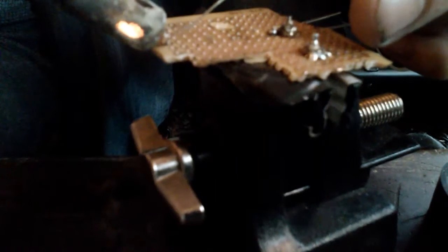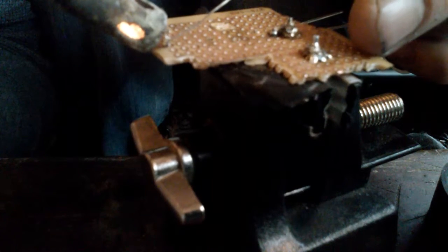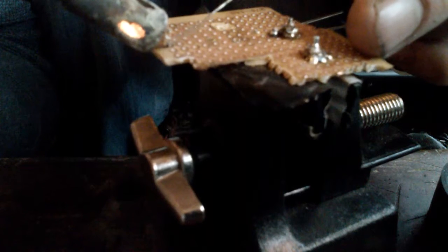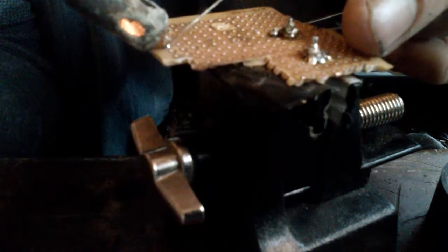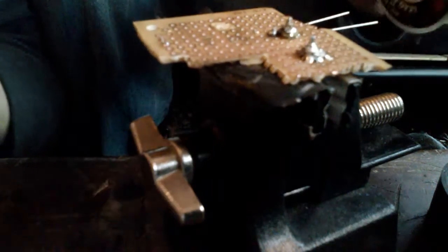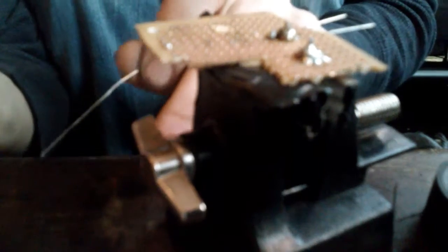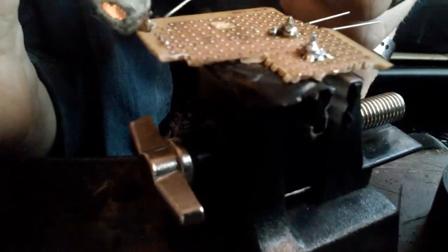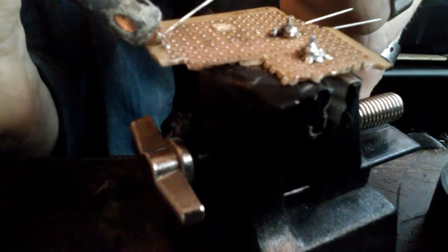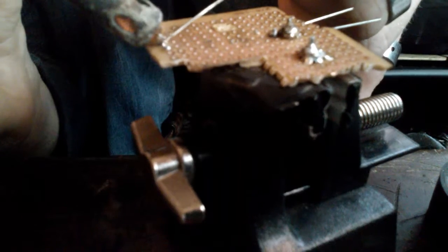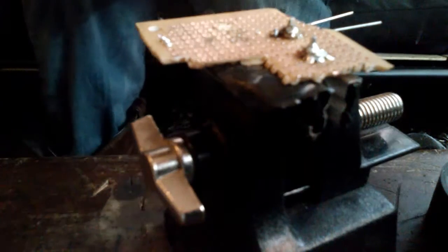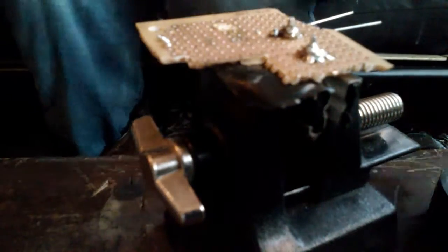So you're going to first solder these legs onto the board. Just like that, a nice smooth little solder joint. Don't let it be messy. You don't want a messy solder joint for this. You don't want messy solder joints ever. Alright, there we go, two little dabs.